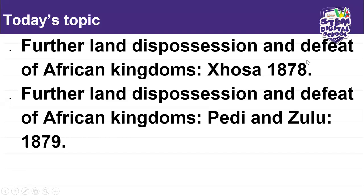For today's topic, we're going to look at further land dispossession and defeat of African kingdoms. I'm going to look at three African kingdoms that were dispossessed of their land and defeated by the British: the Xhosa in 1878, the Pedi and Zulu in 1879.